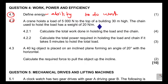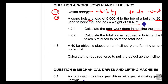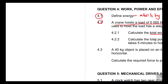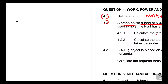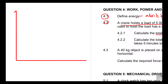4.2: A crane hoists a load of 5,000 newtons to the top of a building that is 30 meters high. The chain used to hoist the load has a weight of 20 newtons per meter. The first part says: calculate the total work done in hoisting the load and the chain. They didn't want you to draw, but it's very important for you to sketch this, because they've already given you most of the information.